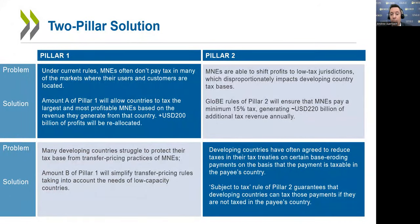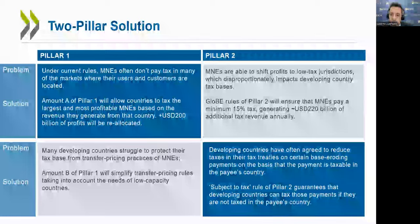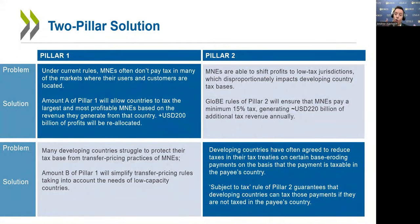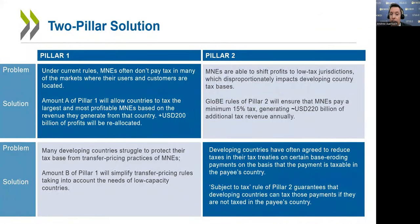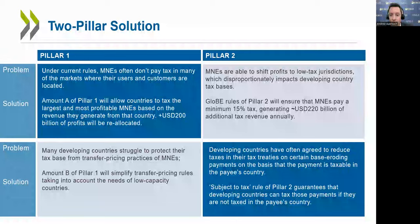Pillar 2 provides a global minimum tax of 15%, which is quite extraordinary. It means that no matter what kinds of tax planning efforts companies undertake, the low-tax profit for the larger MNEs will always be subject to at least a 15% corporate effective tax rate. There will be some accommodation made for substantial activities — investments in real businesses — but generally speaking, the race to the bottom and competition between jurisdictions to offer low tax rates will be set at a floor of 15%.